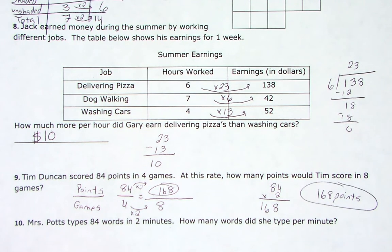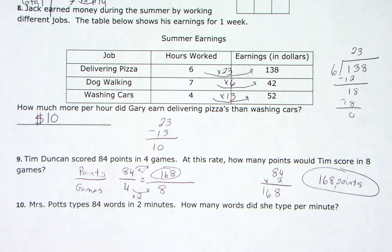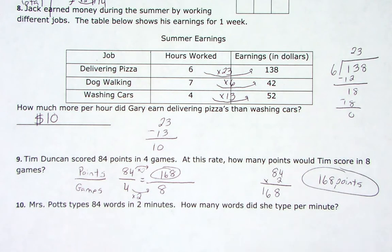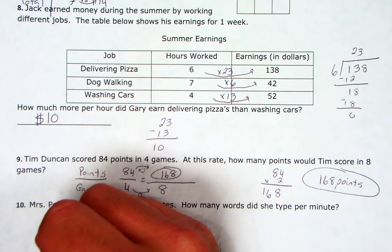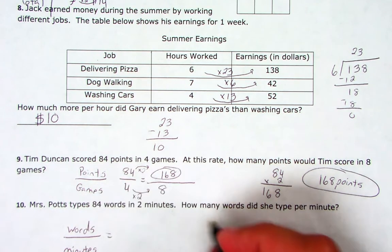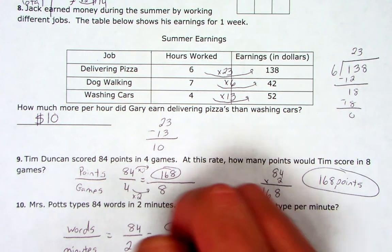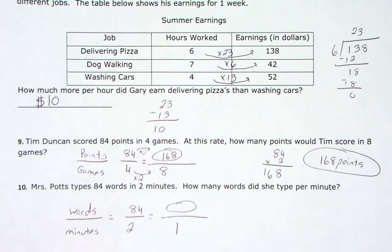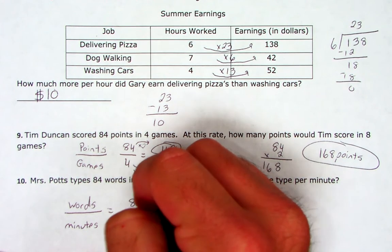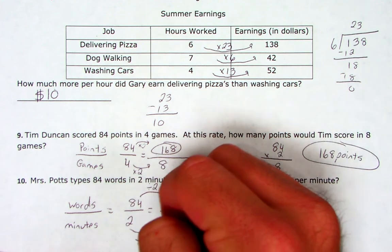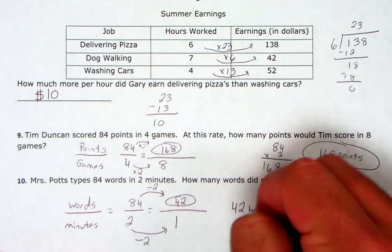Last one: Mrs. Potts types 84 words in 2 minutes. How many words did she type per minute? You know what type of problem this is - this is a unit rate. Remember, a unit rate has a denominator of 1. We're comparing words to minutes: 84 words in 2 minutes, we want to know how many words in 1 minute. To go from 2 to 1, divide by 2. So 84 divided by 2 equals 42 words per minute.